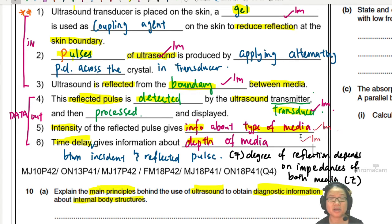Another one that you can write is the seventh one. Degree of reflection. This degree of reflection depends on the impedances of both media, your Z value. Of course, you can write more so that the sentence makes more sense for you and it's easier for you to understand. For example, if I have space, I will say that the fraction of ultrasound reflected depends on the impedances of both media between the boundaries.